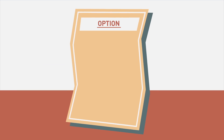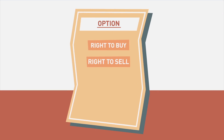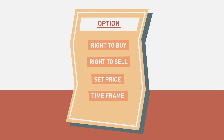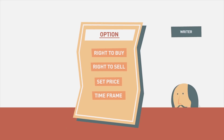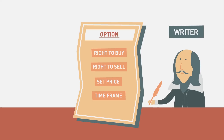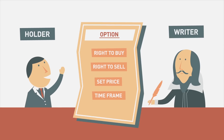An option, in simple terms, is the right to buy or sell a set quantity of a particular security, like a stock, for a set price within a specified timeframe. The selling party is known as a writer and the buying party is the holder, who purchases the option for a fee or premium.